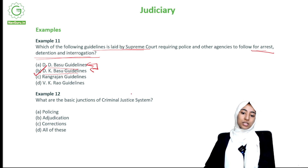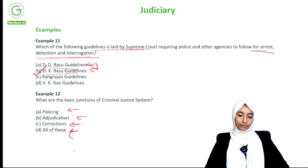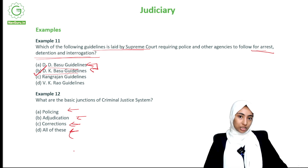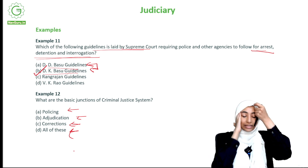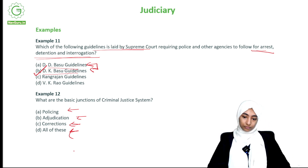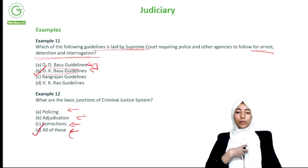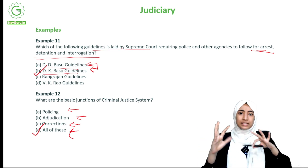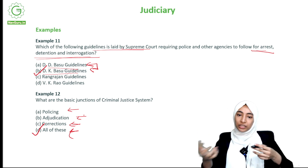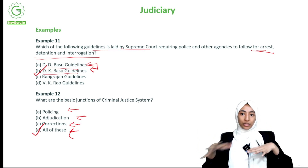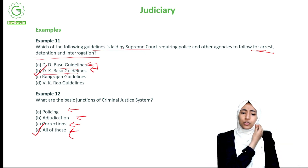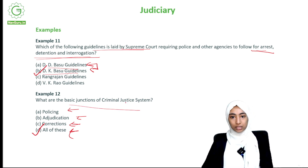What are the basic functions of the criminal justice system: policing, adjudication, corrections, or all of these? The answer is all of these. Policing ensures things happen as expected. Adjudication means passing formal judgment on what is right and wrong. Corrections is also included. All of these are basic functions of the criminal justice system.